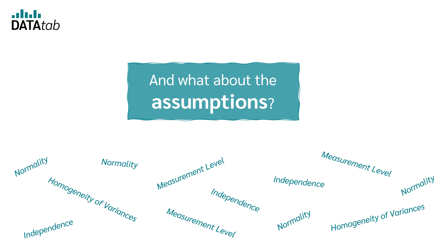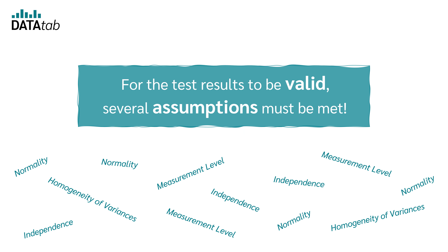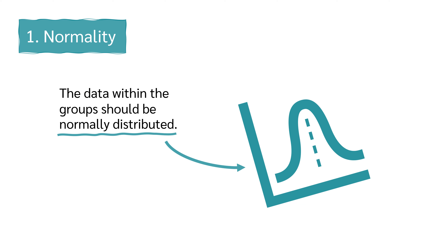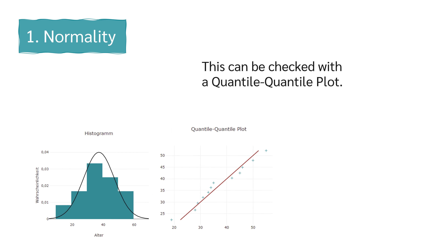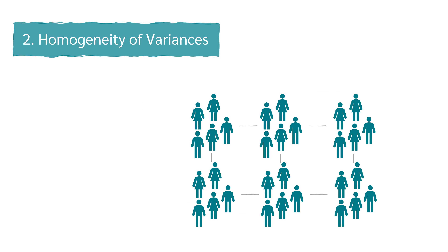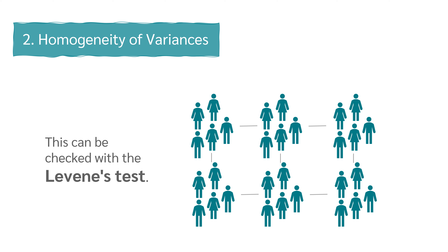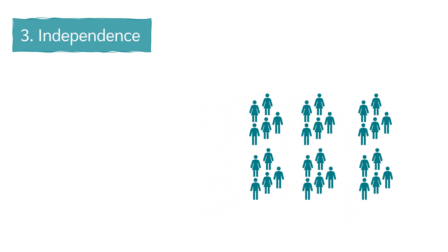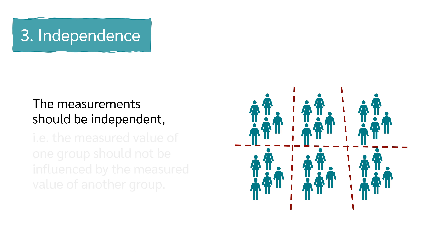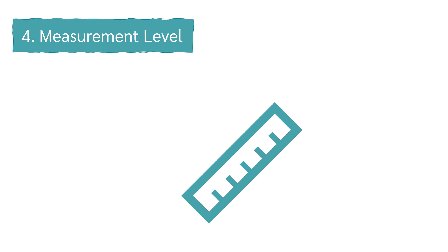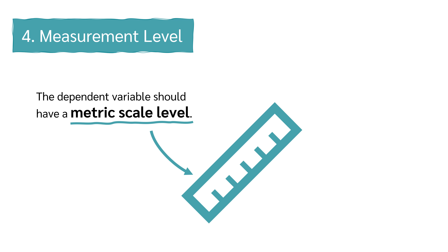For the test results to be valid, several assumptions must be met. 1. Normality: the data within the groups should be normally distributed, or alternatively the residuals should be normally distributed — this can be checked with a quantile-quantile plot. 2. Homogeneity of variances: the variance of data in groups should be equal, checkable with Levene's test. 3. Independence: the measured value of one group should not be influenced by the measured value of another group. 4. Measurement level: the dependent variable should have a metric scale level.